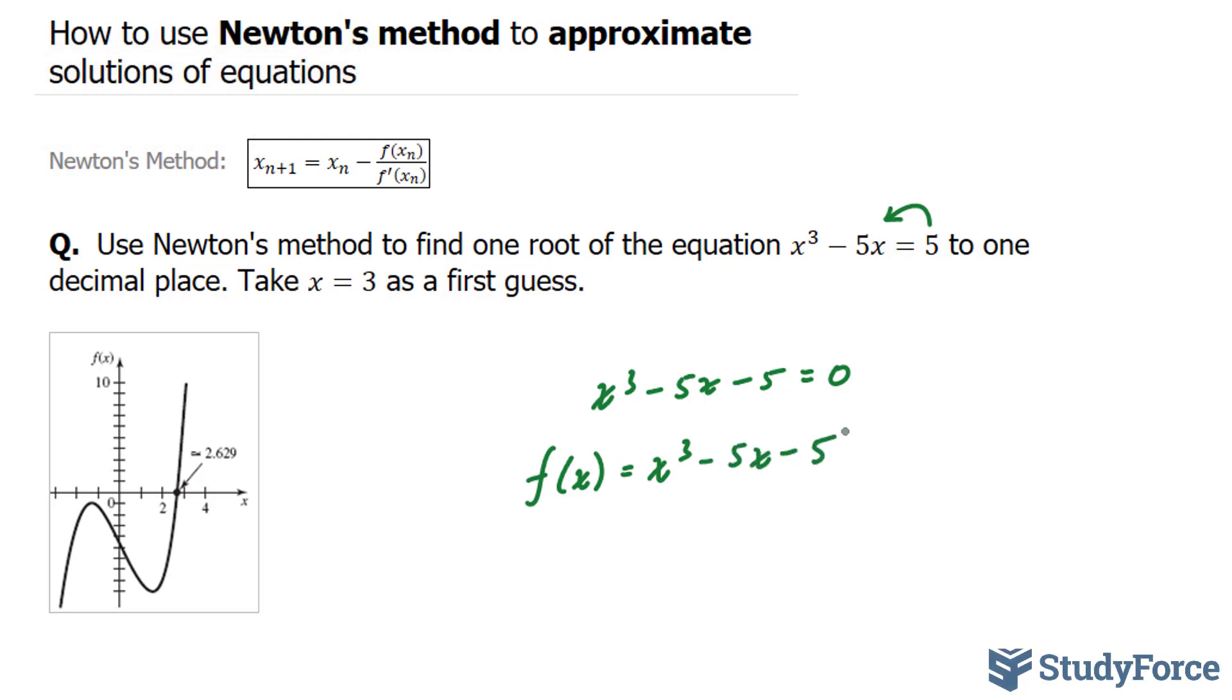The next thing is, you want to find its derivative. So f'(x) equals 3x² minus 5 plus 0. I'm using the power rule for all three terms. We're taking the derivative of a constant, which gives us 0. Once you have the function and the function's derivative, you want to evaluate both of these functions at x equals 3, your first approximation.